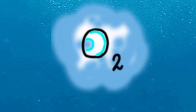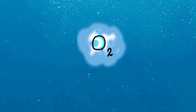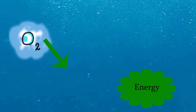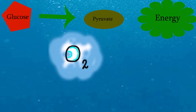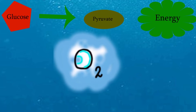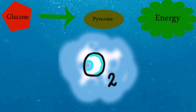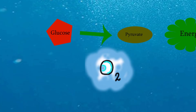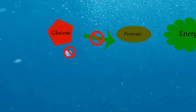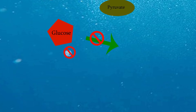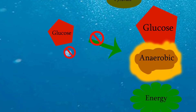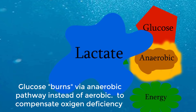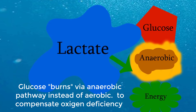As oxygen deficit increases and compensatory mechanisms fail, the body shifts from aerobic to anaerobic metabolism. Normally, glucose is converted to pyruvate in the mitochondrial matrix of the cell and enters the citric acid cycle — a pathway that requires oxygen. But because of the oxygen deficit, glucose is broken down without oxygen. During anaerobic respiration, glucose is not completely broken down, so much less energy is released, and instead of carbon dioxide and water, lactic acid is produced. Lactate is the final product of anaerobic glycolysis in human cells.